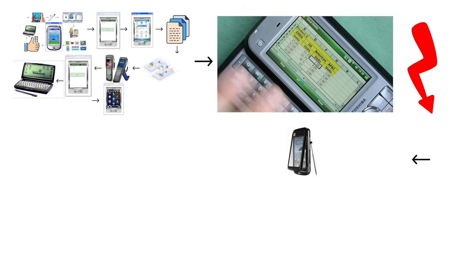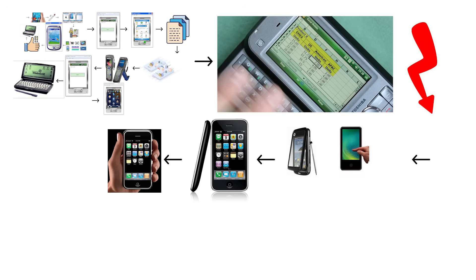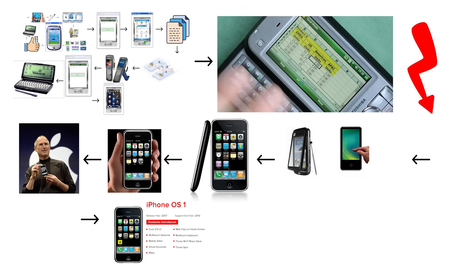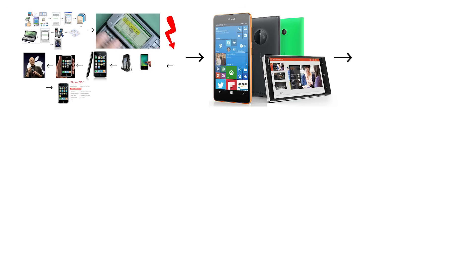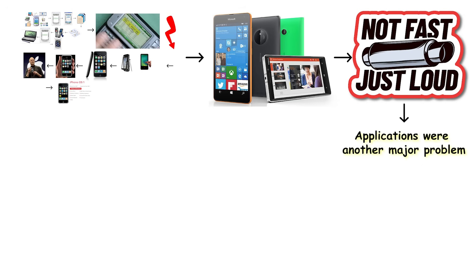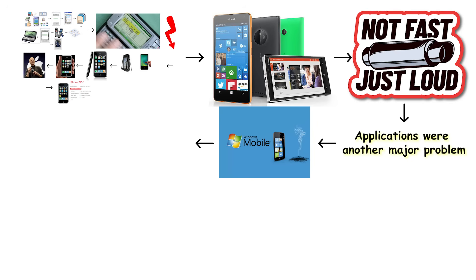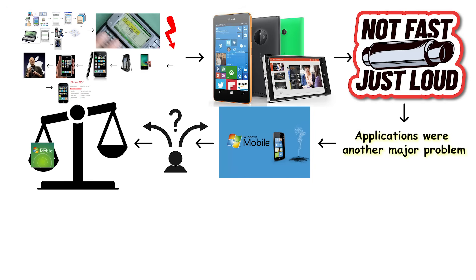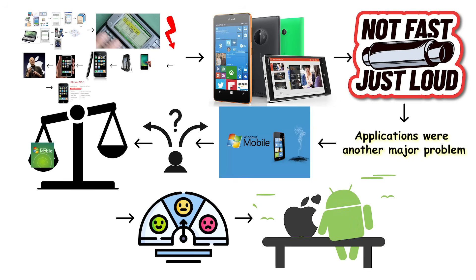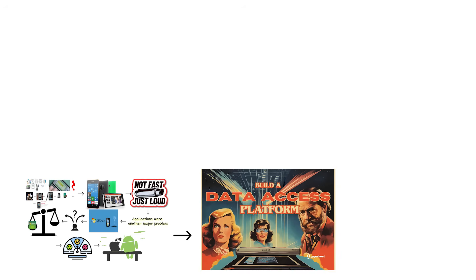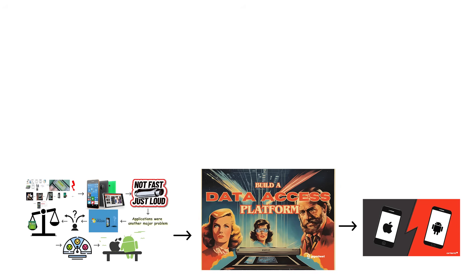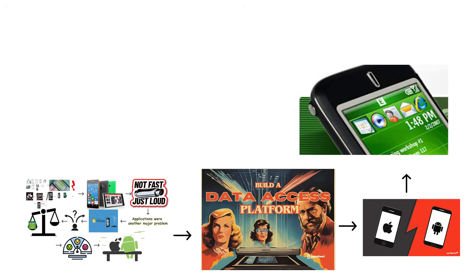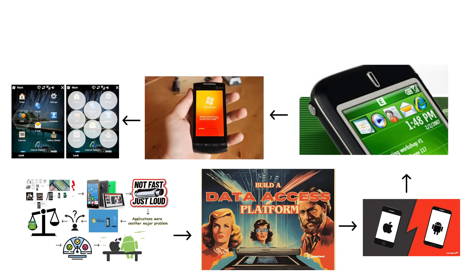Windows Mobile's downfall began when smartphones shifted from stylus-driven navigation to capacitive touchscreens. The iPhone established a new standard with finger-friendly interactions, smooth animations, and applications designed around gestures instead of menus. Windows Mobile, designed around tiny drop-down lists and pixel-precise taps, simply could not adapt fast enough. Applications were another major problem. The Windows Mobile app ecosystem was fragmented, difficult to develop for, and heavily biased toward enterprise tools rather than consumer experiences. Developers moved to iOS and Android because the platforms were simpler to build for and offered access to rapidly growing user bases. Microsoft attempted to update the system with Windows Mobile 6.5, which added finger-friendly icons and UI tweaks, but the underlying architecture still belonged to the stylus era.